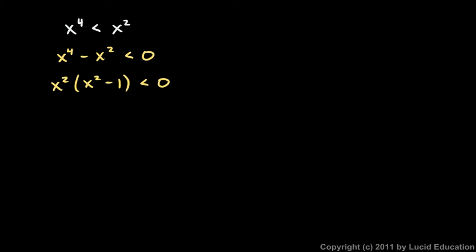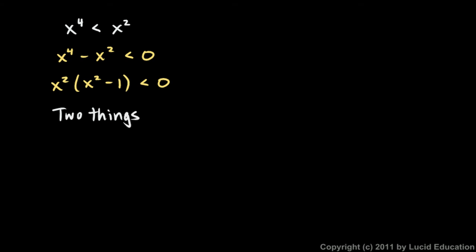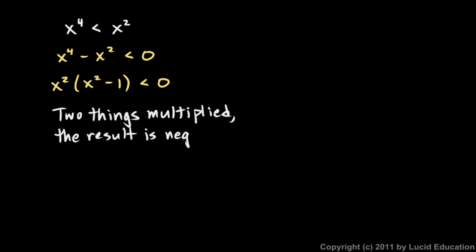Now look at this statement. Two things multiplied together and the result is less than zero means negative. I have two things multiplied together and the result is negative — that's the significant way to think about this. How do you multiply two numbers and get a negative result? The only way is if one of the two is negative. If x squared times x squared minus one results in a negative number, then one of those must be negative.